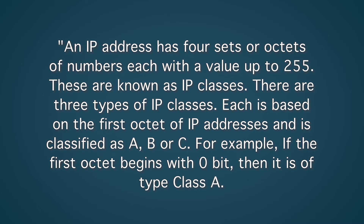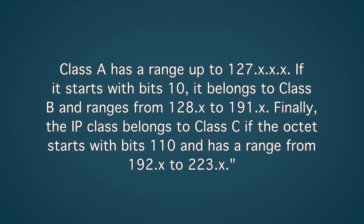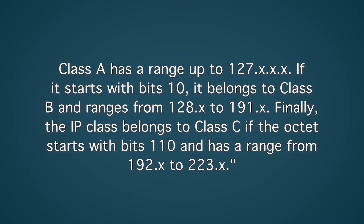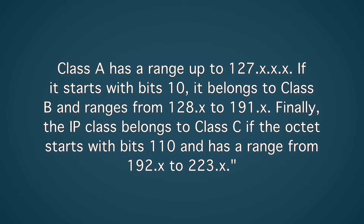For example, if the first octet begins with 0 bit, then it is of type class A. Class A has a range up to 127. If it starts with bits 10, it belongs to class B and ranges from 128 to 191. Finally, the IP class belongs to class C if the octet starts with bits 110, and it has a range from 192 to 223.